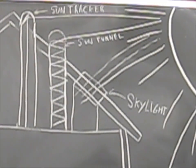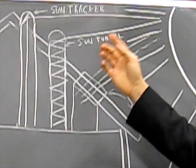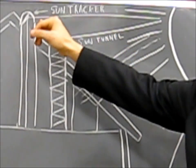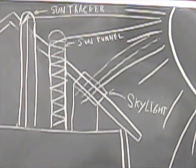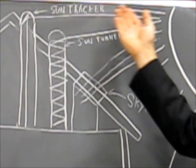Our product, in a nutshell, is a sun tunnel, except it reflects the light directly down, minimizing losses. We call this product the Sun Tracker.